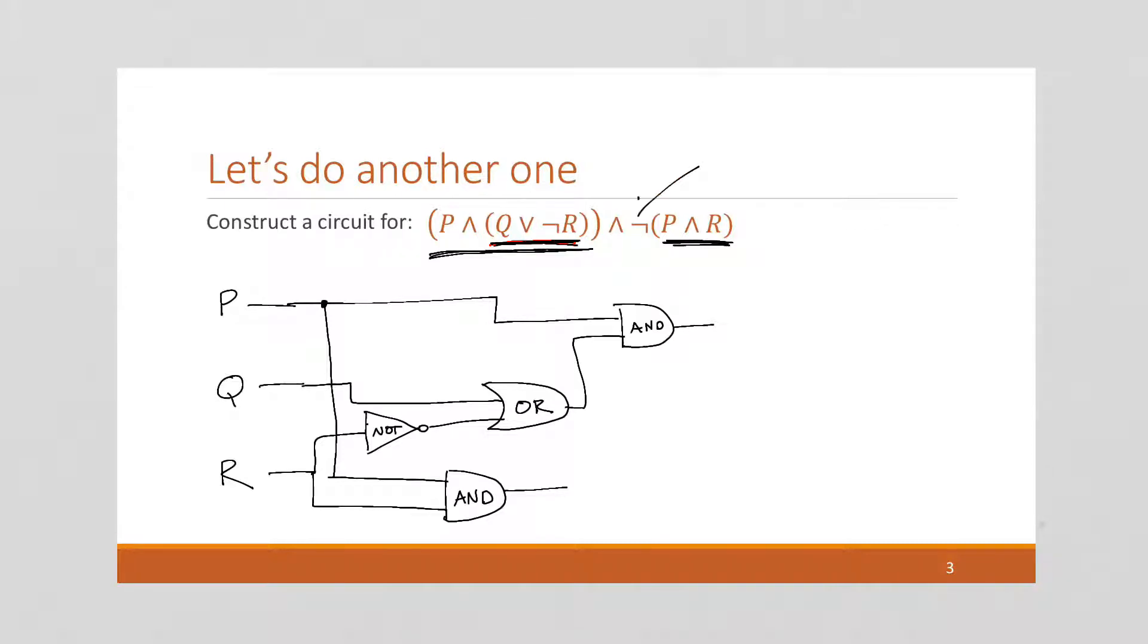And now we have P and R. Now, notice the P and R is negated in our original problem. So, I'm going to put that through a NOT gate. And then, finally, these two parts are AND together. And there we go. We have the circuit for that Boolean expression. And you can run through and check that if you'd like.